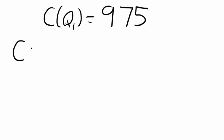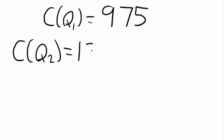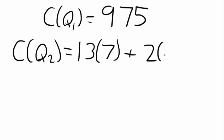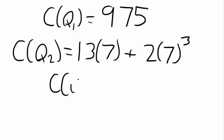For the cost function for quantity 2, we have 13q, where q is 7 in this situation, plus 2q cubed, which is 7 cubed. By plugging that into a calculator, we get a cost for quantity 2 equals 777.